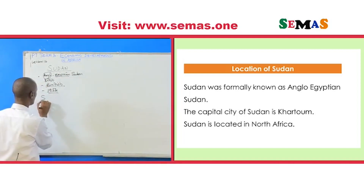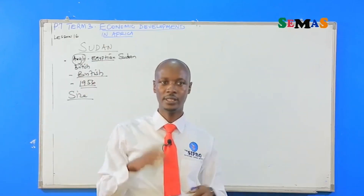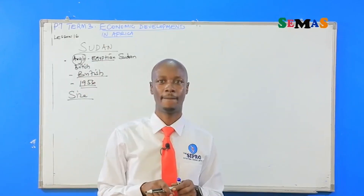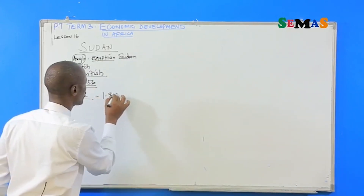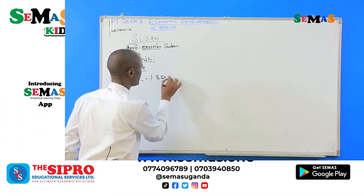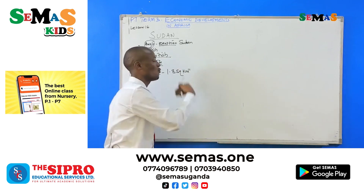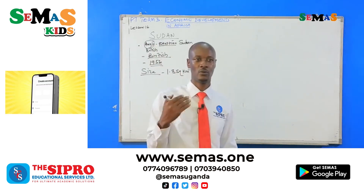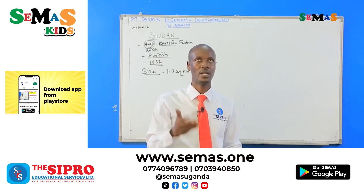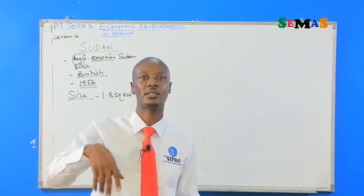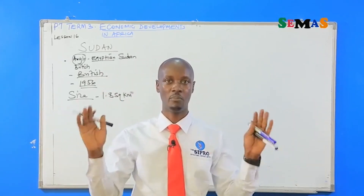What's the size of Sudan? Sudan covers an area of around 1.8 million square kilometers. So it's a very big country.